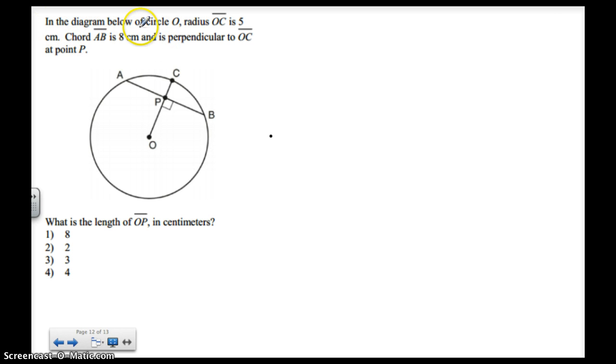In the diagram below of circle O, radius OC is equal to 5. So I know the radius is 5. That's one good piece of information. I'm going to underline that. I like underlining important information. Chord AB is 8 centimeters, and is perpendicular to OC. So I know that these are perpendicular. What is the length of OP in centimeters? So OP is this right here. I want to find this at the end of the day. Well, that's a little hard, because there's not much to work with here. I know AB is 8. AB is 8, and it's perpendicular to OC.